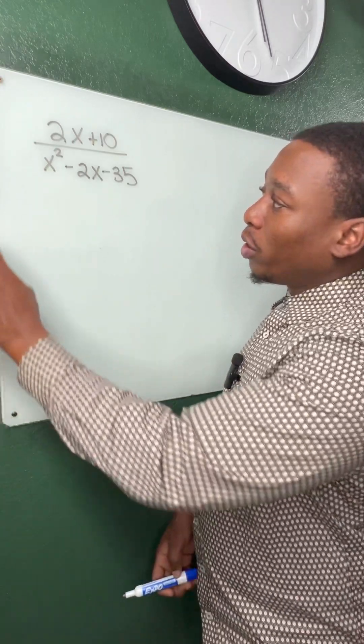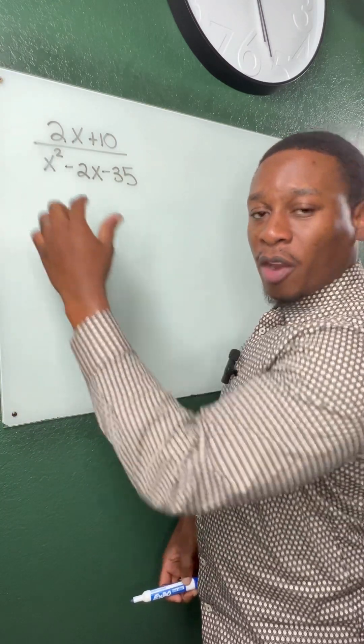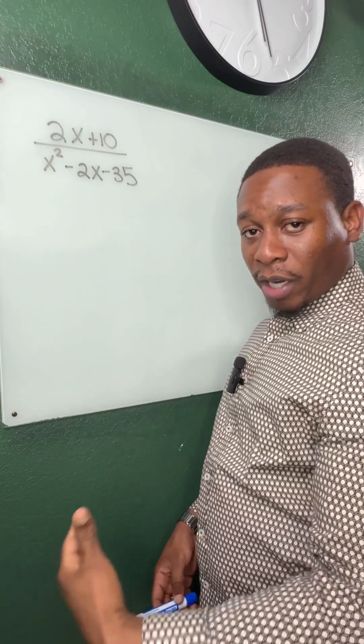So they give us a rational expression, and they want us to simplify this. And the way that we simplify is factoring and dividing.